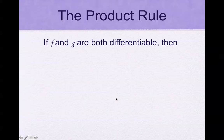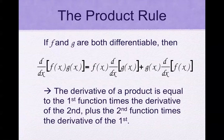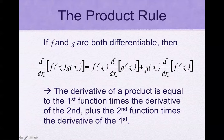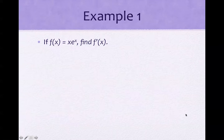So we have to have a product rule. If f and g are both differentiable, then the derivative of a product equals the first function times the derivative of the second, plus the second function times the derivative of the first.